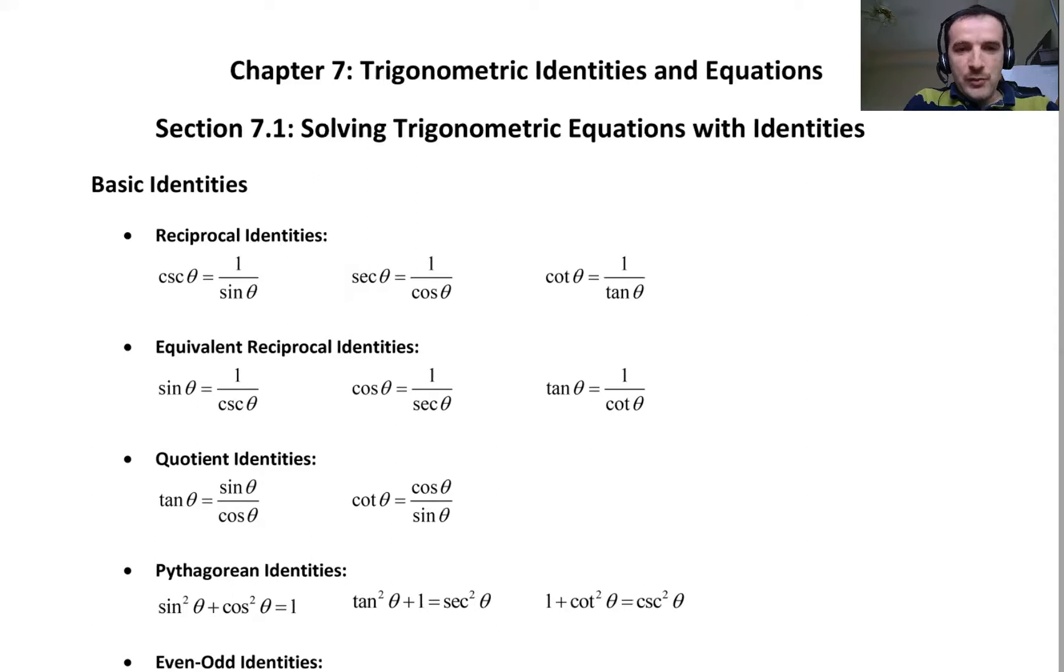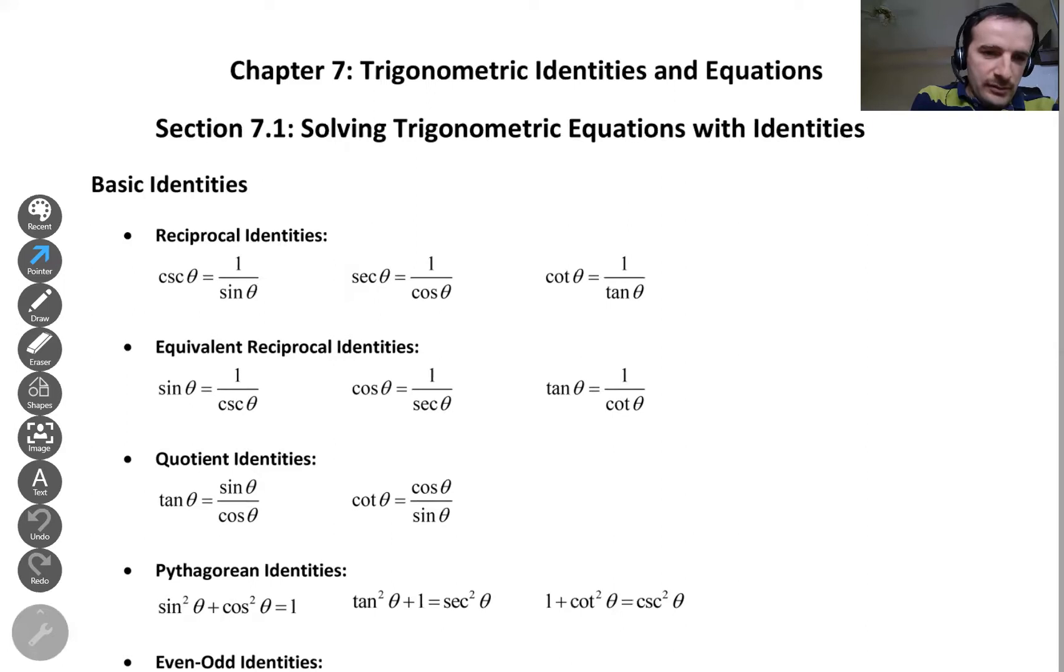As you may remember, cosecant is equal to 1 over sine, secant is equal to 1 over cosine, cotangent is equal to 1 over tangent, right? You remember that?